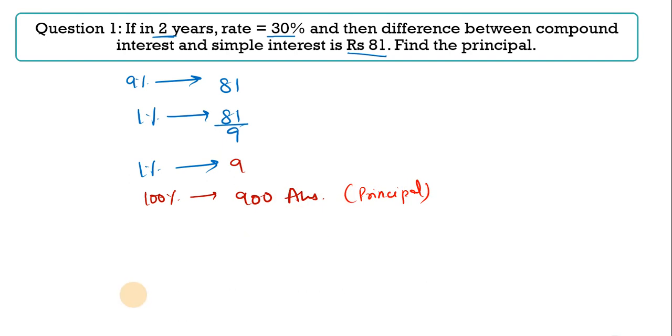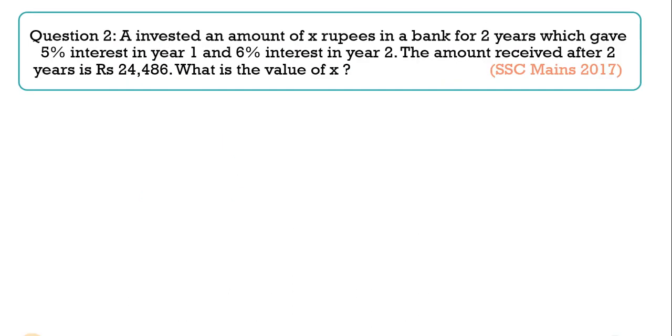So 1% will give you 81 upon 9, that is 9. So 100% will be equal to your 900, and this will be your principle. This will be my principle which we had to take out, and I got my answer. This will be my answer. Simple. This was a 3 seconds question, solved in 3 seconds. You can put it in the star. This question was in SSC Mains 2017.